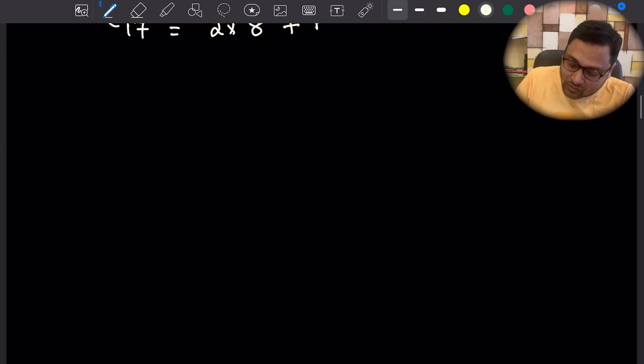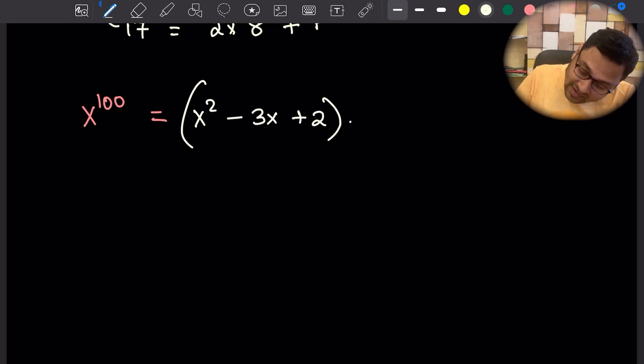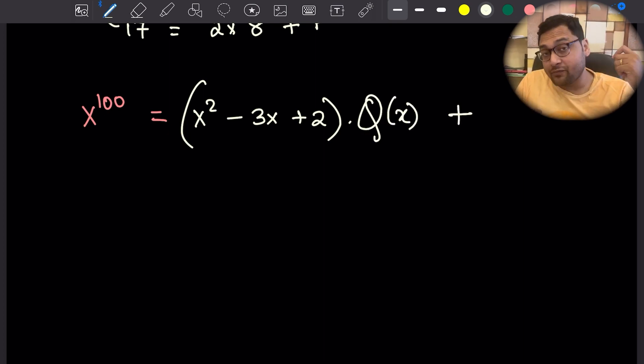If you understand this much, then let's write x to the power 100 as x squared minus 3x plus 2 times some quotient plus the remainder. We already know that the remainder is some ax plus b.